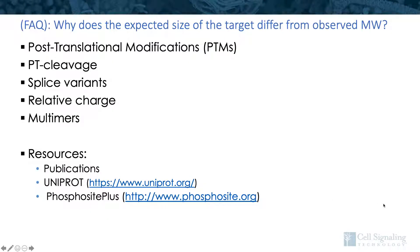Going back to the target size question, the expected molecular weight is based on amino acid sequence listed in UniProt or other sources, and this may not be accurate because it doesn't account for how the protein migrates on the gel. The listed amino acid sequence also does not account for post-translational modifications or PTMs — enzymatic modifications of proteins following biosynthesis, including phosphorylation, acetylation, and glycosylation. Post-translational cleavage can occur, as some proteins are synthesized as pro-proteins then cleaved to make the active form. Alternative splicing and isoforms could create different-sized proteins from the same gene. Relative charge, composition of charged versus uncharged amino acids, and potential for multimers such as dimerization also affect migration.